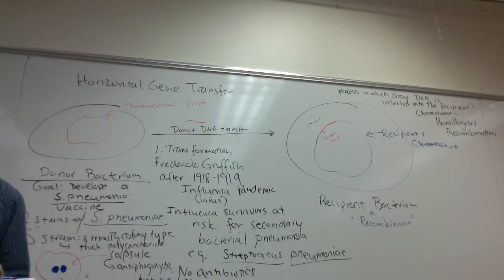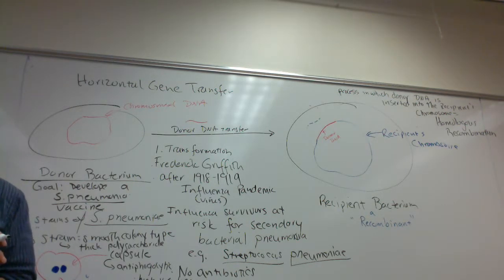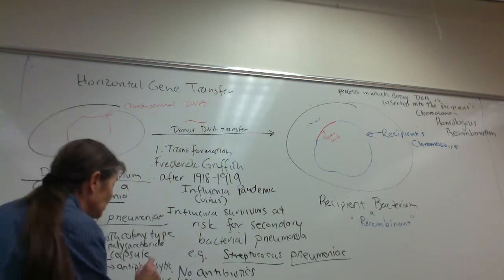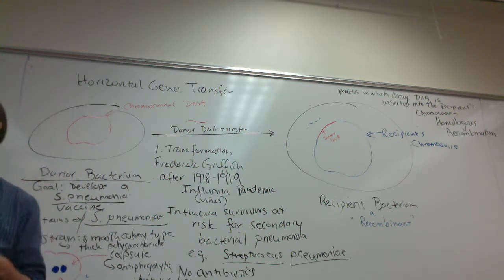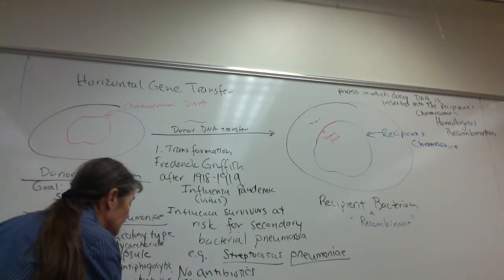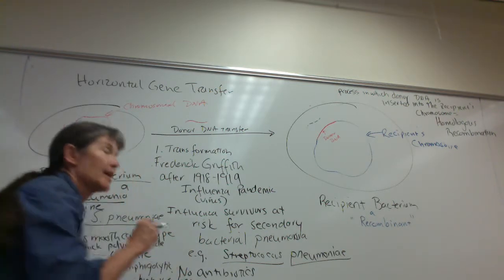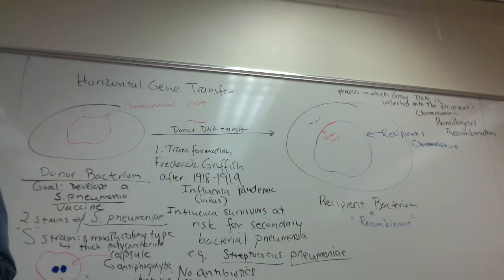Virulence is a measure of how much damage a pathogen can do — the ultimate damage being death. Griffith was using mice, not human subjects. When he inoculated mice with the living S strain, they died. The S strain is highly virulent and kills the test animals.